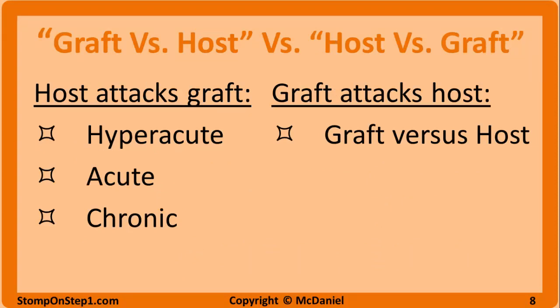Now let's take a step back and look at the big picture. The three types of rejection we've discussed all involve the immune system of the person receiving the organ attacking the donated tissue — this could be called host versus graft, though that phrase isn't used very often. The signs and symptoms are primarily localized to the donated organ. Graft versus host disease is the opposite — here the immune cells in the donated tissue attack the patient receiving the donation, proliferating and spreading through the body, causing problems in multiple different organ systems.